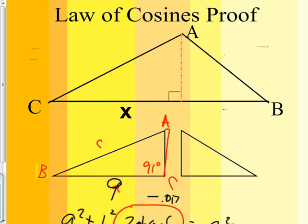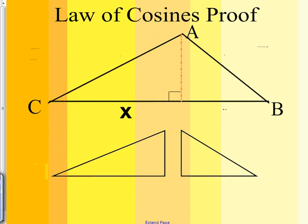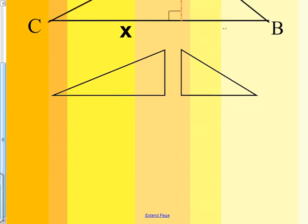Moving on to the Law of Cosines proof slide. I'm not going to do the whole proof because it takes about 15 minutes. I need to get you through all of Law of Cosines today, so I'm going to show you generally why it works. In a right triangle, the long side is called C so that A squared plus B squared equals C squared. The Law of Cosines starts with that, but then there's something more that has to be added.